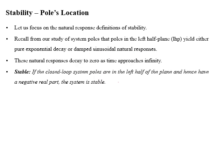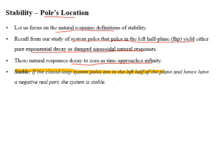Now we will define stability on the basis of pole location. Focusing on natural response definitions of stability, if poles of the system are on the real axis in the left half plane, then the natural response is an exponential decay. If we have complex poles in the left half plane, then we have a damped sinusoidal natural response. All these natural responses decay to zero as time approaches infinity. Therefore, if the closed-loop system poles are in the left half plane and have negative real parts, then the system is stable.